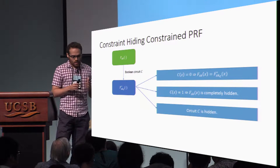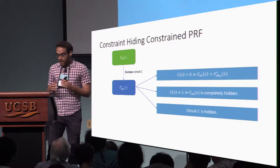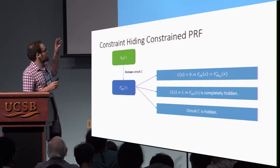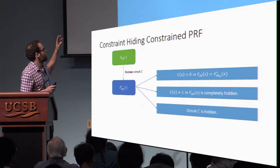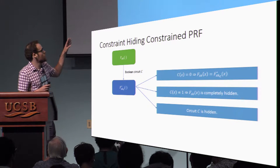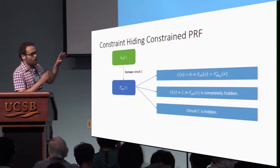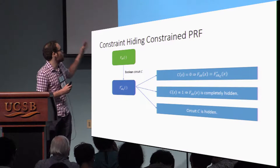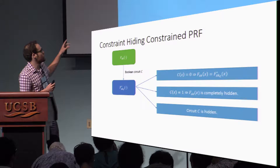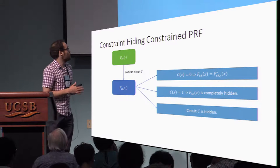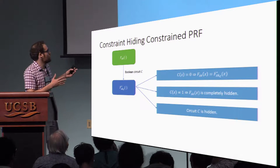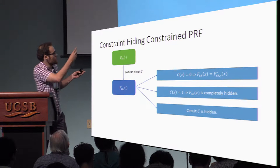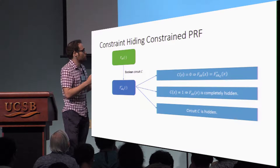A constraint-hiding constrained PRF is a normal PRF which has this nice property. Given a circuit C, we can produce — by 'we' I mean anyone who holds the secret key for the PRF — we can produce a constrained version of the PRF. And what does that mean? That means that this constrained version of the PRF satisfies all these three properties informally.